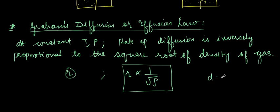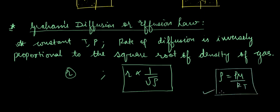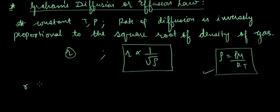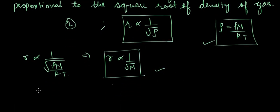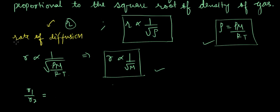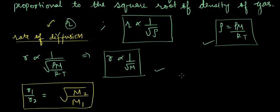We know density rho can be written as PM/RT. Since temperature and pressure are constant, r is inversely proportional to the square root of the molar mass M of the gas. For the ratio of rate of diffusion of two gases with molar masses M₁ and M₂, we write: r₁/r₂ = √(M₂/M₁), where M₂ is the molar mass of the second gas and M₁ is the molar mass of the first gas.